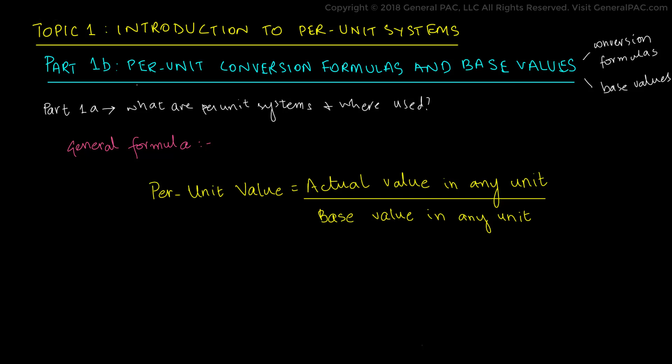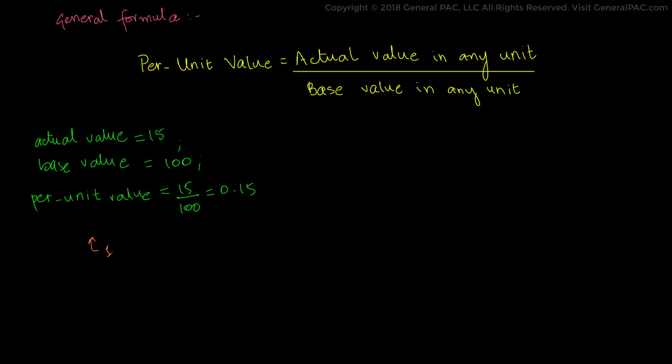For example, consider taking an actual value of 15 and a base value of 100. Then the per unit value becomes 0.15. This is just a simple example and 15 and 100 are just numbers. In power engineering, these numbers can take the form of voltages, currents, impedances, and power.